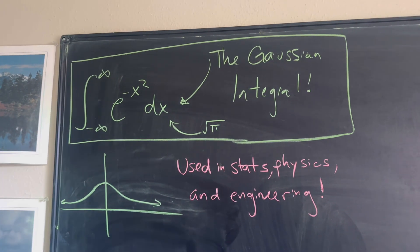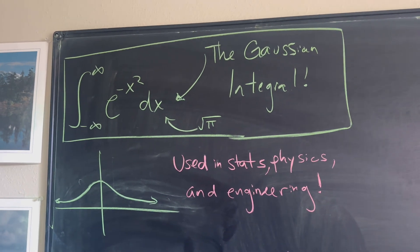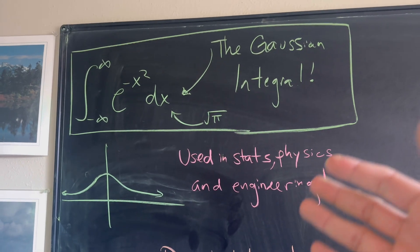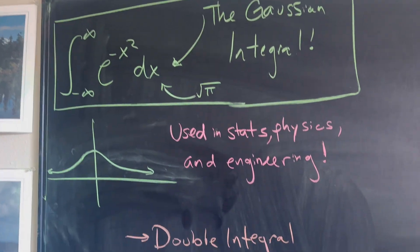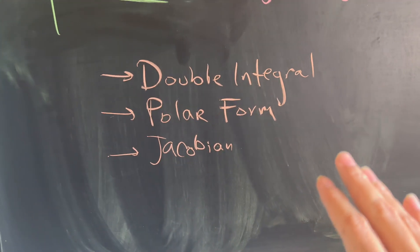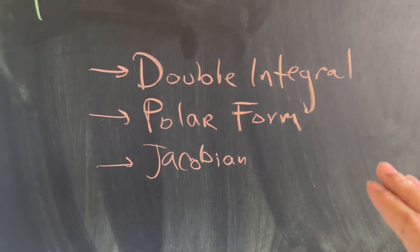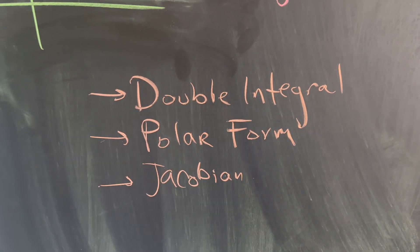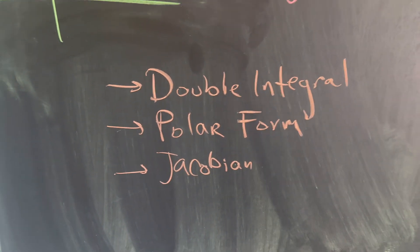Before we get started, I'm going to assume that you have some basic understanding of calculus. We're going to go ahead and solve this using a double integral. We're going to use polar form, and if we're doing that, we need to know something about the Jacobian.